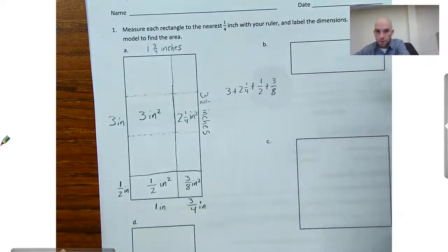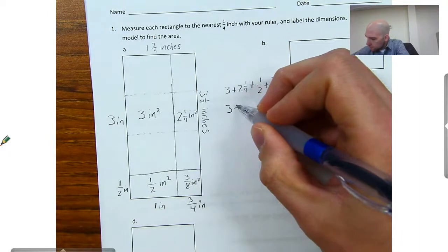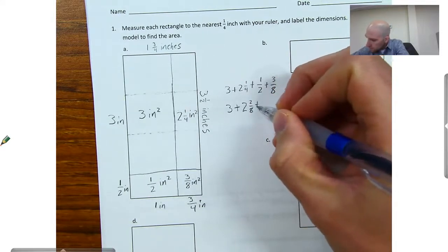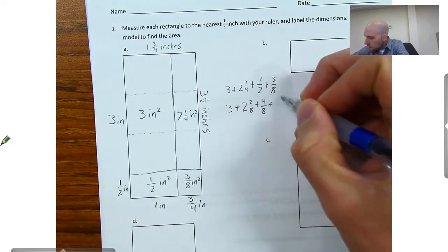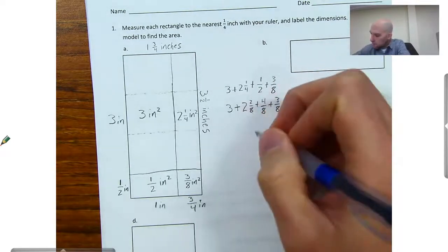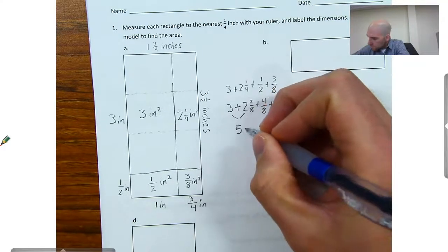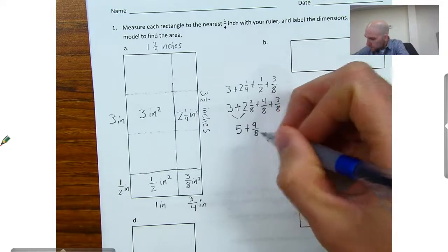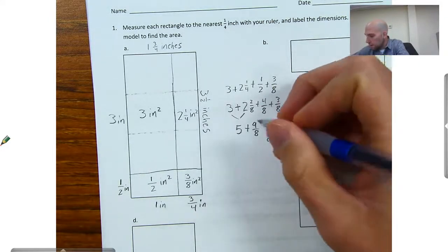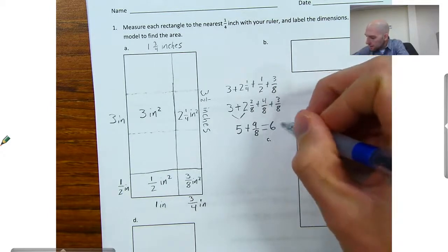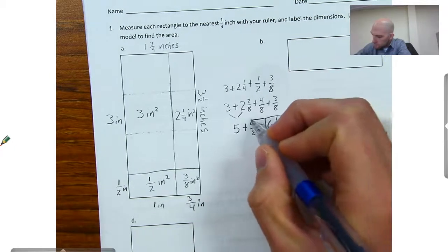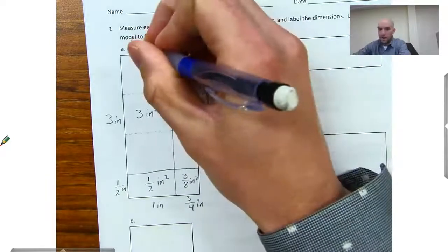Now I'm going to need to get a common denominator for all of those fractions. It looks like eighths is going to be my common denominator. So I'm going to turn this into 3 plus 2 and 2 eighths, plus 4 eighths, plus 3 eighths. So 3 plus 2 plus 2 is 5, and 2 plus 4 plus 3 will give me 9 eighths. Well, 8 eighths equals 1, so that'll be another whole, and I'll have 1 eighth left over. So I'll have 6 and 1 eighth square inches in my area. And that one's for letter A here — 6 and 1 eighth.